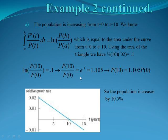This implies that if we exponentiate both sides to get rid of the natural log, the population at time 10 divided by the population at time 0 equals e to the 0.1. Now, e to the 0.1, if you plug that into your calculator, is 1.105. Multiplying both sides by p(0), this implies that the population at time 10 is 1.105 times the population at time 0. The decimal part after 1 represents our rate of increase, so our population increases by 10.5% over these 10 years.